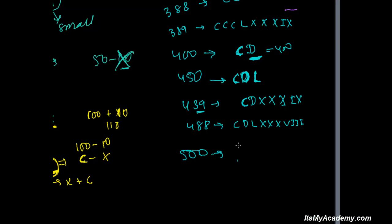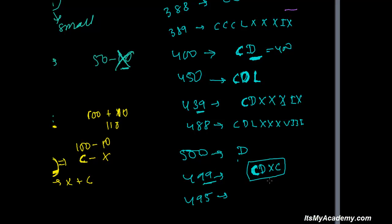For 500, just write D. For 499, do you write D and then I? No — before D only C is possible, not I. So 499 is 400 plus 99: C D X C IX. For 495, write 400 plus 95: 95 is X C V, so it is C D X C V.